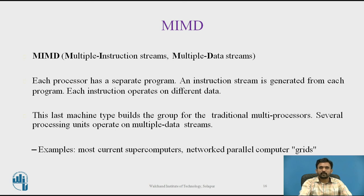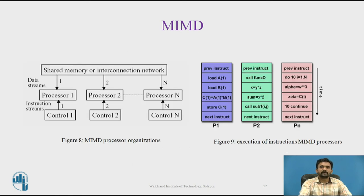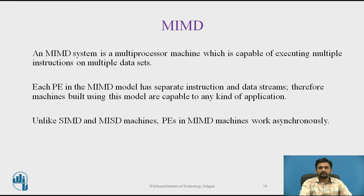Current supercomputers and parallel computer grids are examples of MIMD. In MIMD, every processor may be executing a different instruction stream, and every processor may be working with a different data stream. Multiple data streams are provided by shared memory and can be categorized as loosely coupled or tightly coupled depending on sharing of data, and execution can be synchronous or asynchronous. An MIMD system is a multiprocessor machine capable of executing multiple instructions on multiple data sets, where each processing element has a separate instruction and data stream. Therefore, machines built using this model are capable of any kind of application.